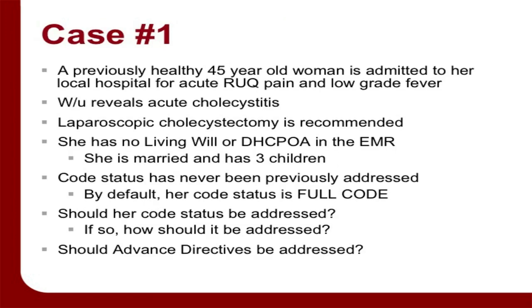Case one is the basically healthy person: a healthy 45-year-old woman admitted for acute right upper quadrant pain with low-grade fever. Workup reveals acute cholecystitis; laparoscopic cholecystectomy is recommended. She has no living will, no power of attorney, is married with three children, and code status has never been previously addressed — by default, her code status is full code. Should her code status be addressed in this setting, and if so, how? Should advanced directives be addressed?